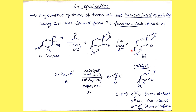The remaining secondary hydroxyl is then oxidized using pyridinium chlorochromate (PCC) to get the fructose-derived catalyst used for the reaction. This catalyst is used for the epoxidation of trans-olefins. What you need is an oxidant in the reaction, which could be Oxone or any other suitable species, and you need a buffer medium for this particular reaction.